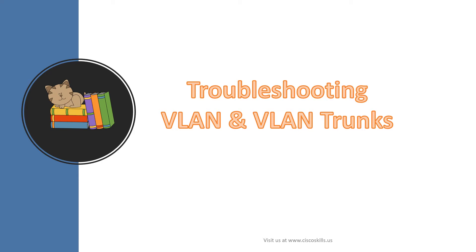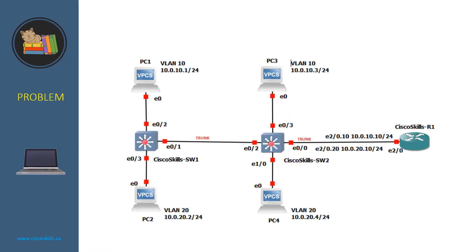In this video we talk about troubleshooting VLAN and VLAN trunks. Let's get into the basic configuration of this network. Switch 1 and Switch 2 are connected together via a trunk link, and Switch 2 is connected to Router 1 via a trunk link. PC1 and PC3 are in VLAN 10, and PC2 and PC4 are in VLAN 20.